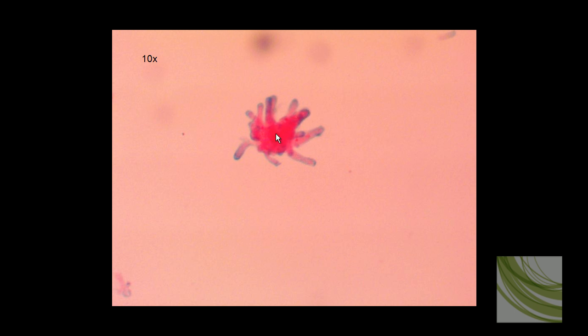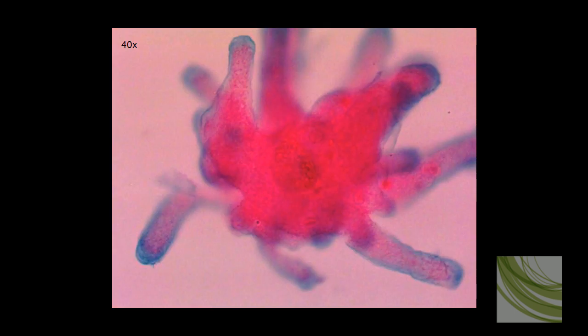Here we can see the amoeba using the 40x objective. We can see the two different stains, a green and a red. There's obviously the nucleus. Not sure if that's the tip of a pseudopod or maybe a food vacuole. Possible food vacuoles there and there.